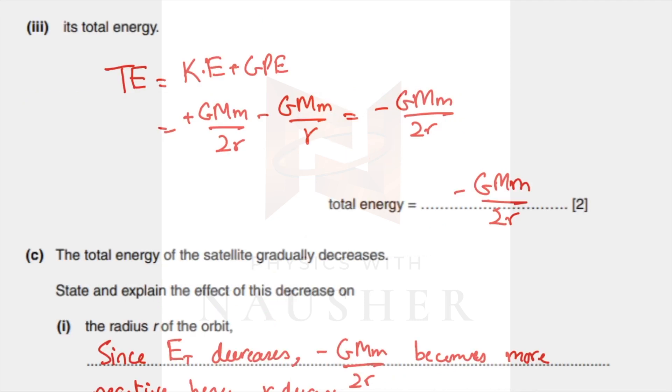Next find the total energy. Total energy is kinetic energy plus gravitational potential energy. Kinetic energy is GMm over 2r, gravitational potential energy is minus GMm over r. Take the LCM - you get 2r, then the numerator will get minus GMm, so total energy is minus GMm over 2r.